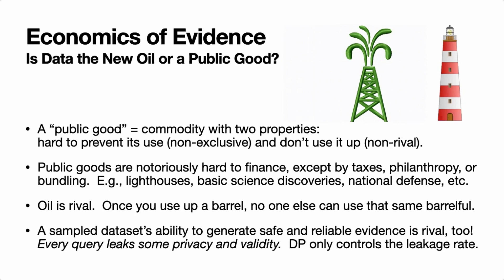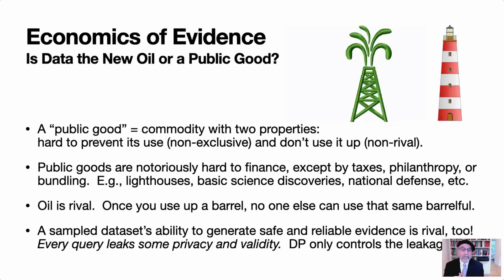That brings me to the economics of evidence and the question I raised at the beginning. For an economist, a public good has two properties: it's hard to prevent its use once it's out there — that's non-exclusive — and you don't use it up once it's out there — that's non-rival. Public goods are wonderful, but notoriously hard to finance. There are only two and a half ways: by taxes, by philanthropy, or sometimes by bundling a private good with a public good. Examples include lighthouses, basic science discoveries, and national defense. Open data sets without privacy concerns are public goods too — non-exclusive and non-rival.